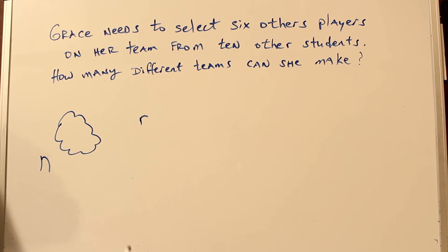So we have to find out what our n is, our universe of numbers, and r, the number of selections that we're going to make. Here we have ten students to pick from. So our universe of numbers is ten. n is ten. And we're going to be selecting six other players. So r equals six.